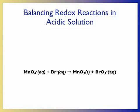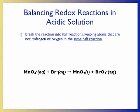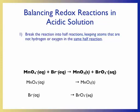Our first step is to break the reaction into half-reactions. We make two half-reactions that contain the same atoms that are not hydrogen or oxygen. For our example, one half-reaction involves the species containing the manganese atom, and our second half-reaction contains species involving the bromine atom.